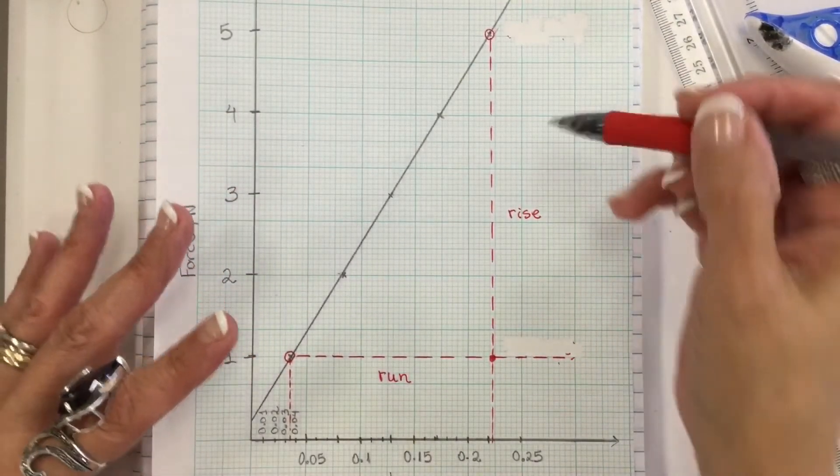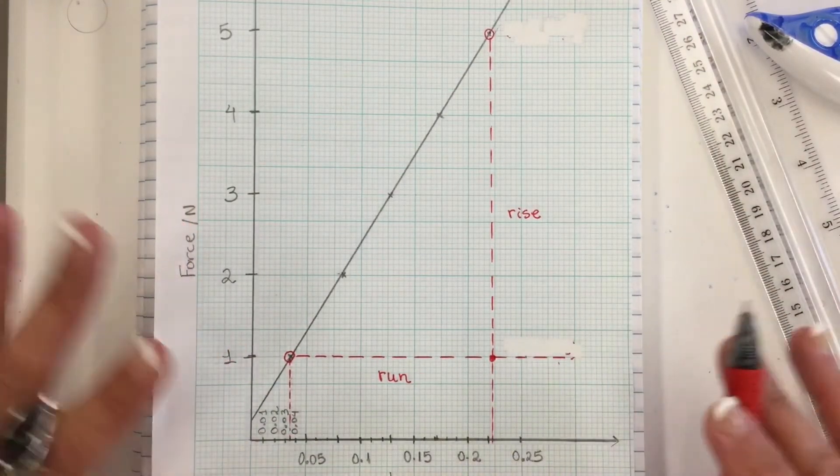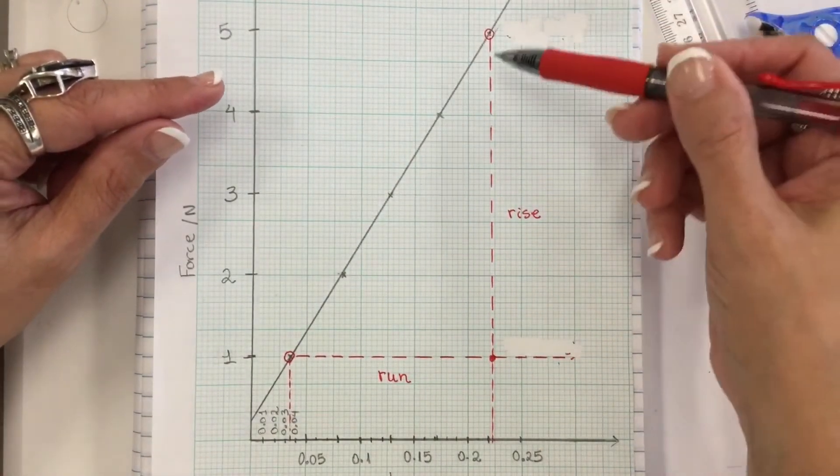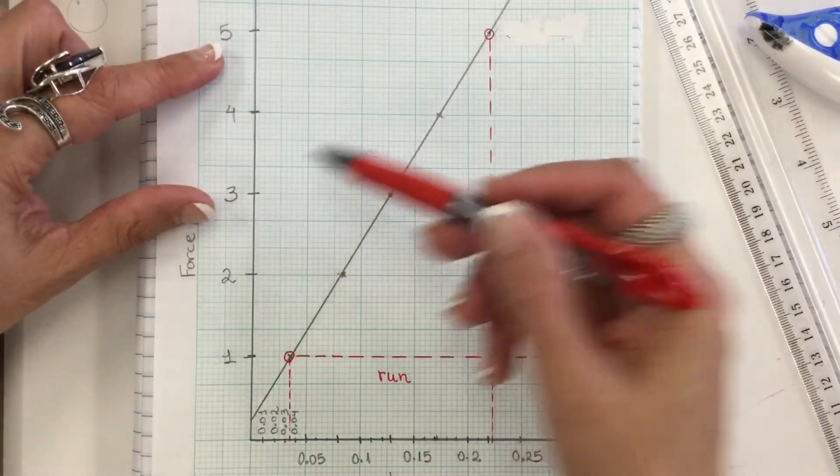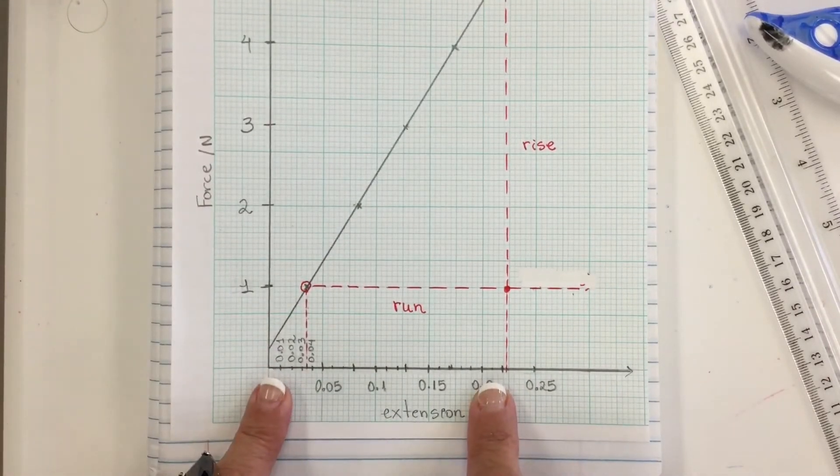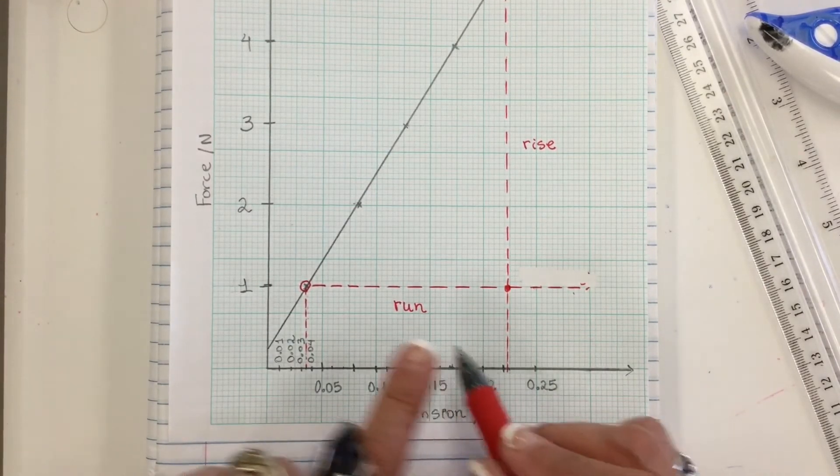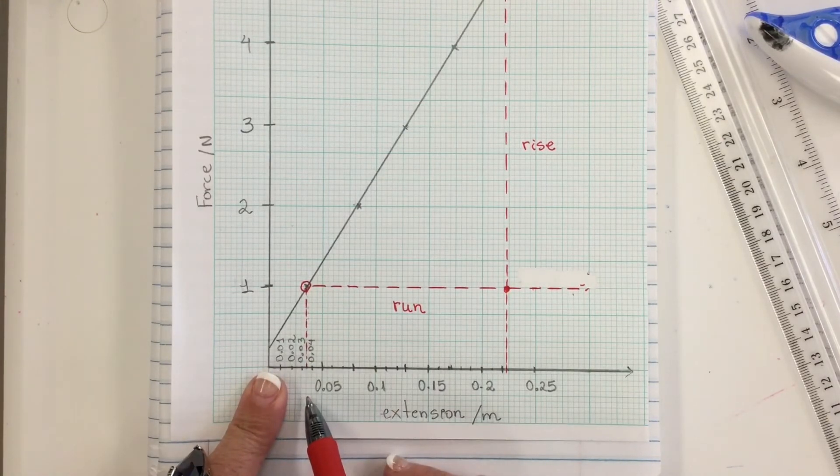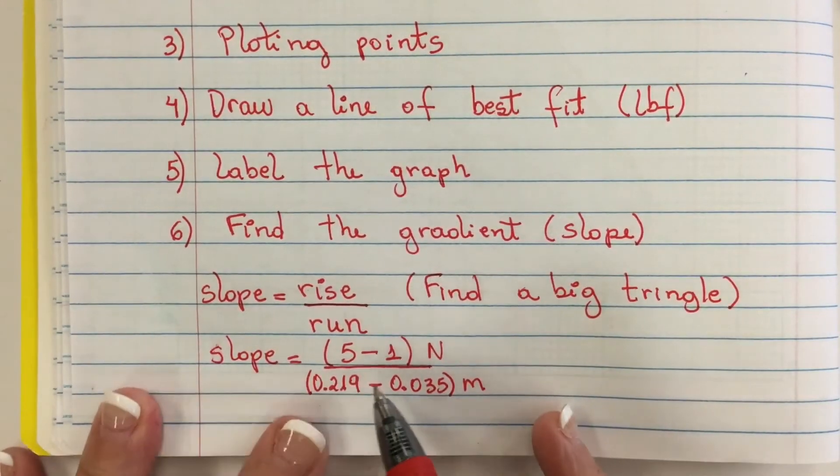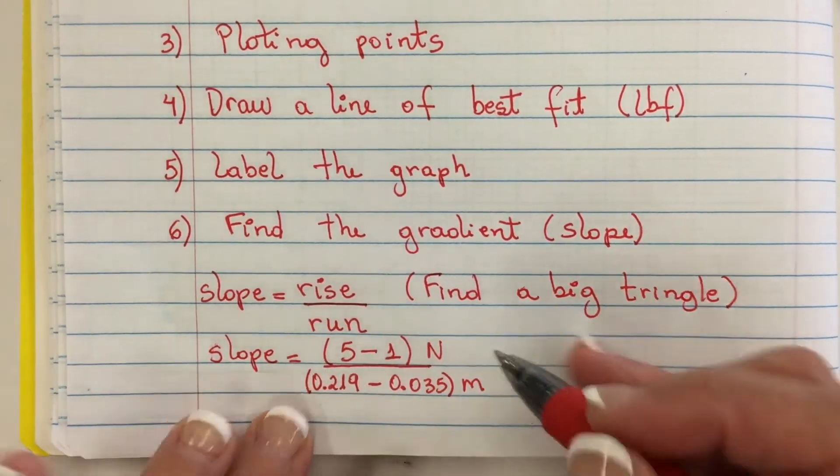I want to make a correction in this video. Previously, I had two numbers here and two numbers here that were not correct. What I want to do is concentrate only on what we have here for rise that corresponds to the y-axis, so 5 minus 1. And the same thing with the x-axis. It'll be this value right here which is 0.219 minus 0.035 which is this. So now I have done my substitution with the y and with the x.